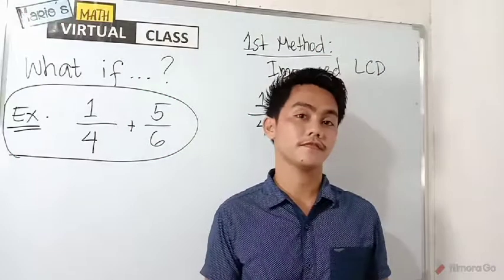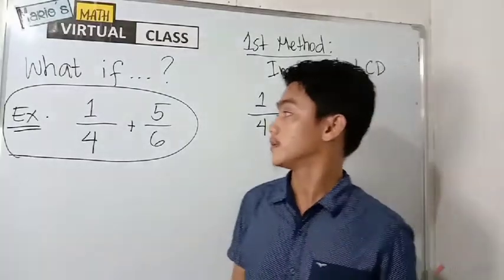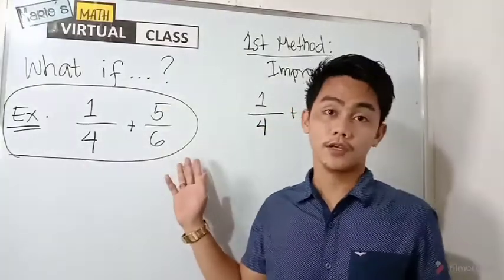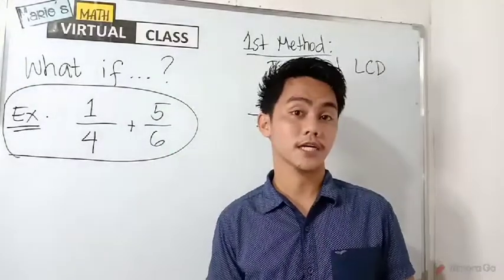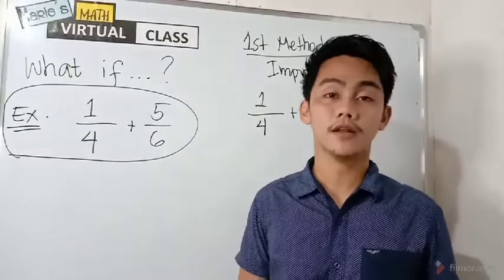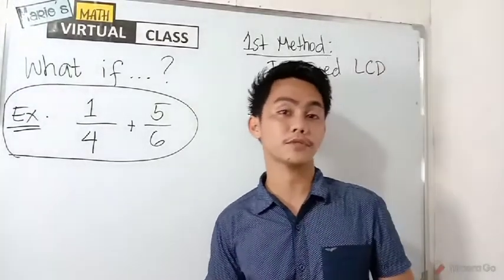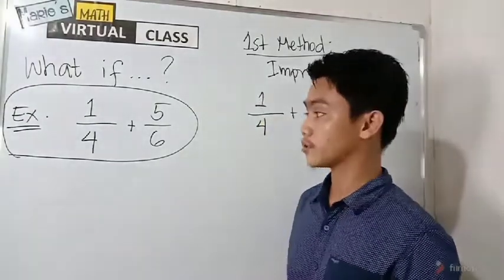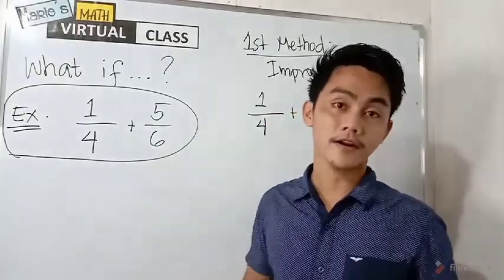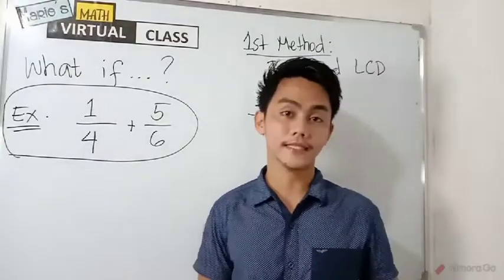What if this is your expression? Example, one-fourth plus five-sixths. Look at these fractions. You can see that they are not similar because their denominators are different. So we call them dissimilar. So how do we solve these types of fractions? We solve these types of fractions simply by transforming them to similar fractions. So how do we do that?